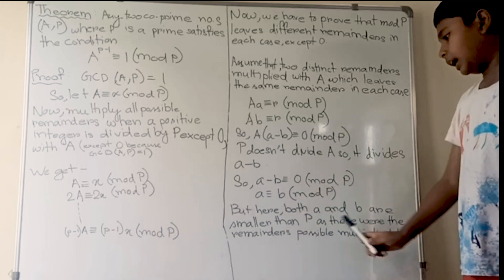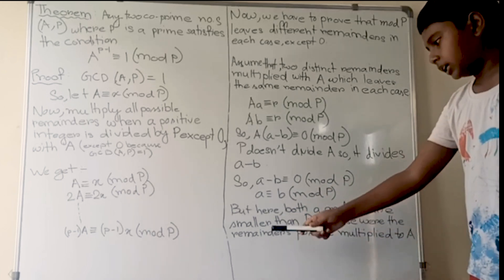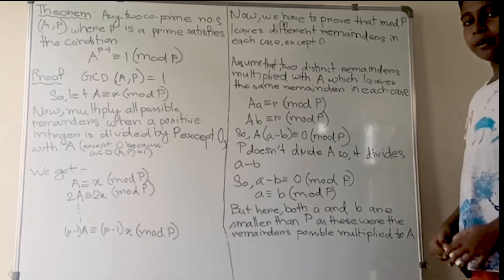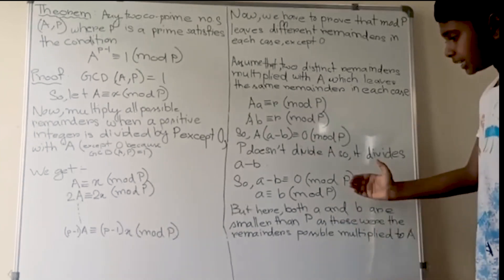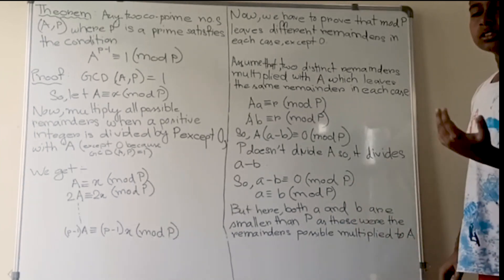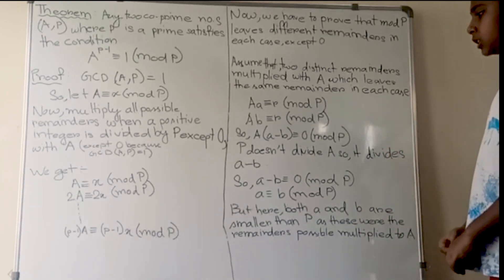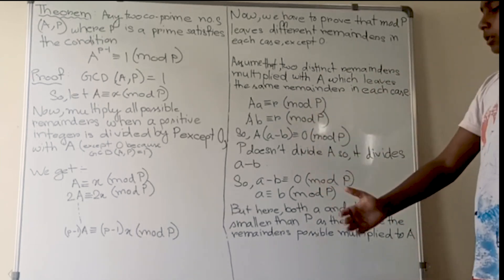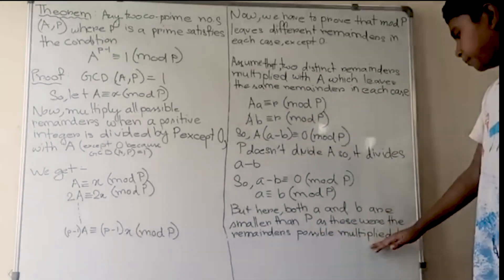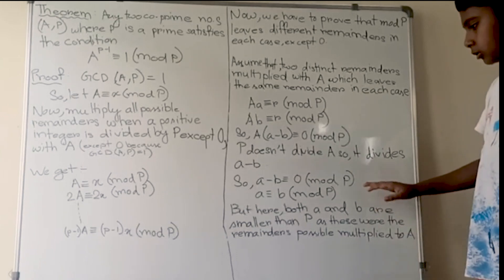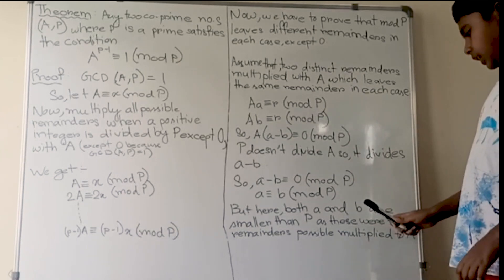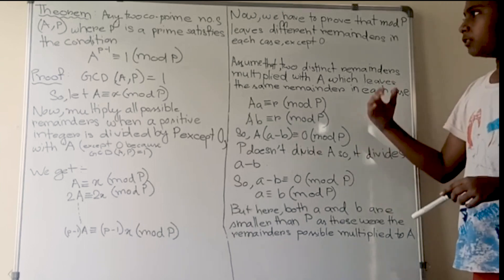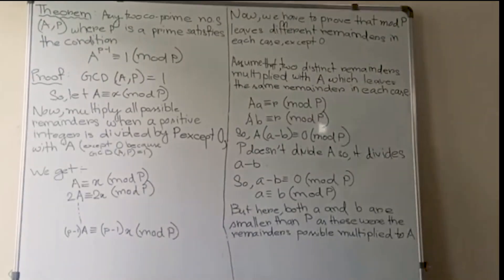But both a and b are possible remainders when dividing by p, so they are both smaller than p. Since remainders are always smaller than the divisor, we need to use this fact in the next part of the proof.